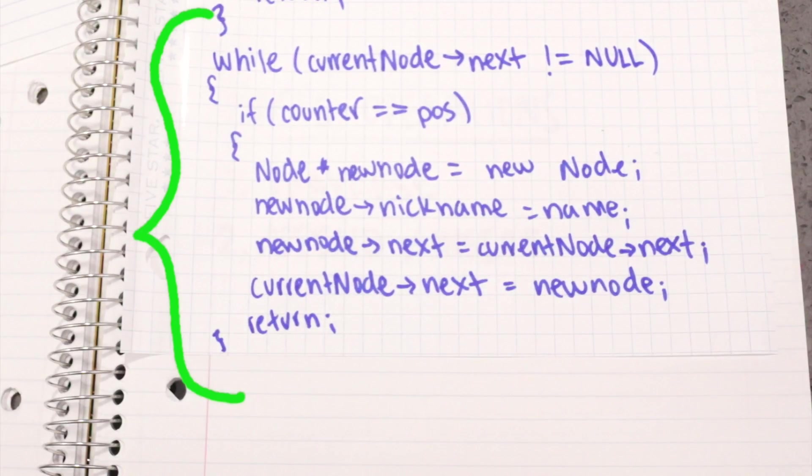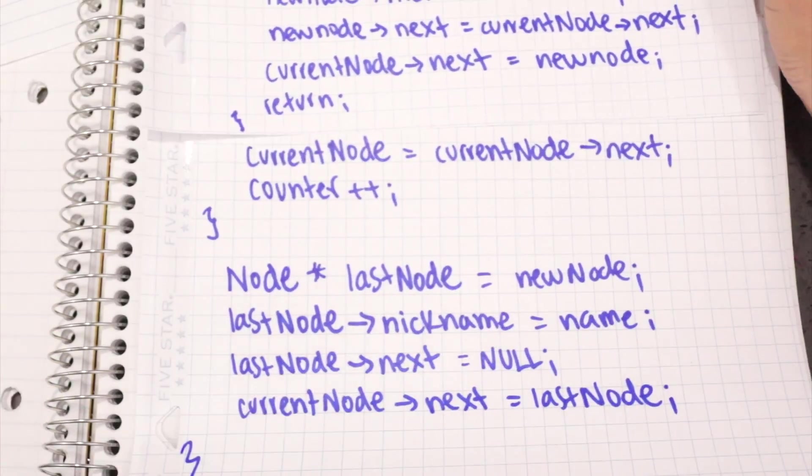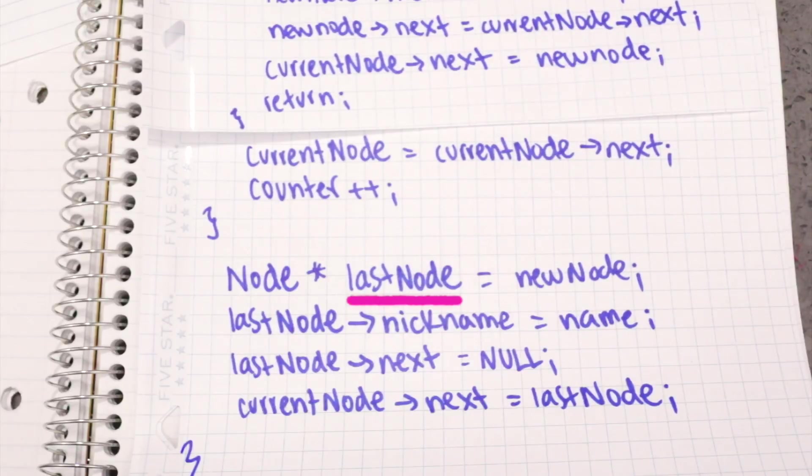If the position is not the first in the list, then I iterate through the list with a counter and find the insertion point of the new node. When found, I create the new node, set its successor pointer to the iterator successor node, and the iterator successor pointer to the new node. If the position is at the end of the list, then I create the new node, set its successor pointer to null, and the iterator successor pointer to the new node.